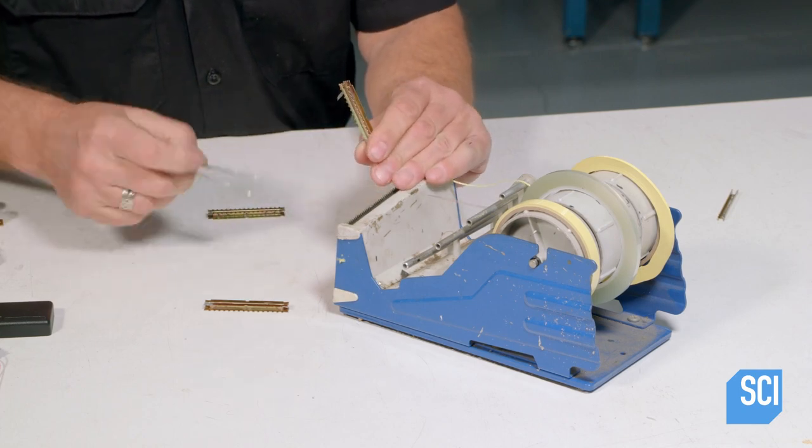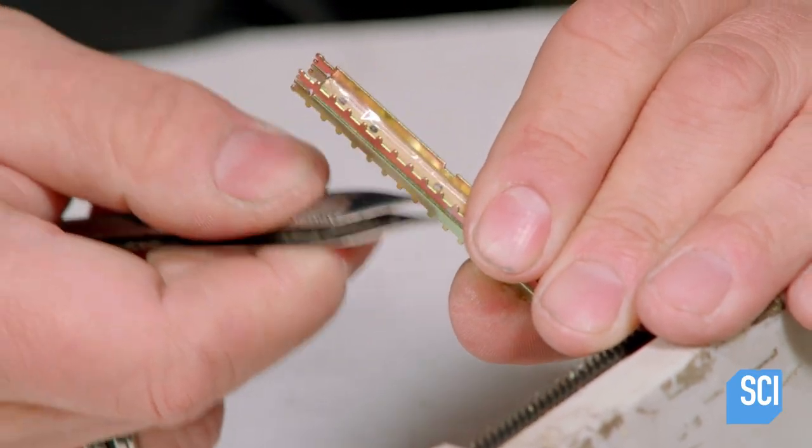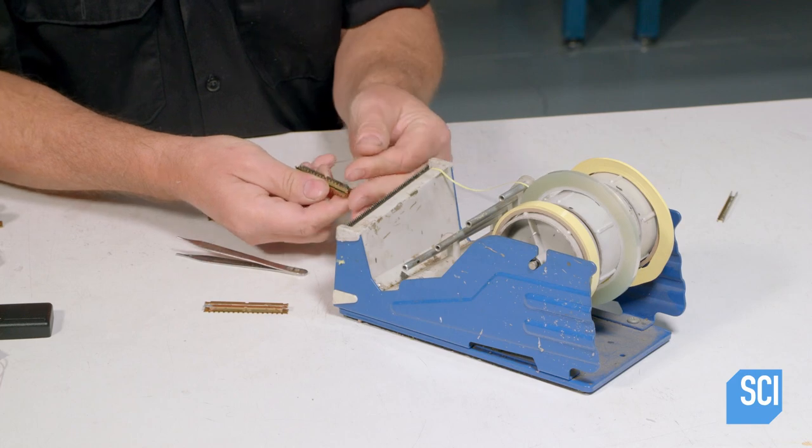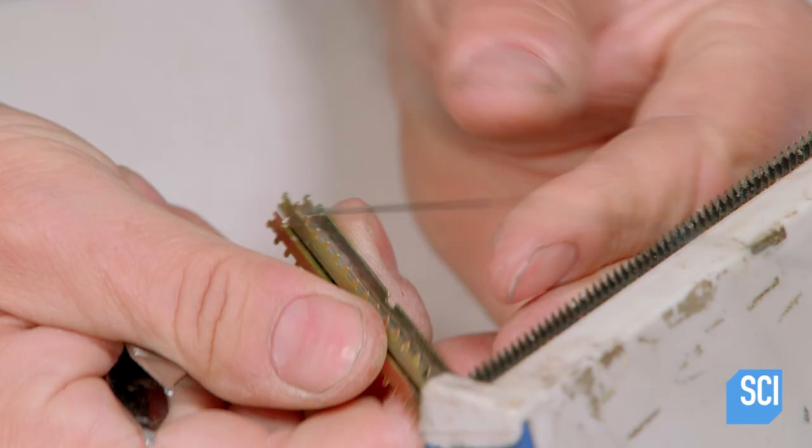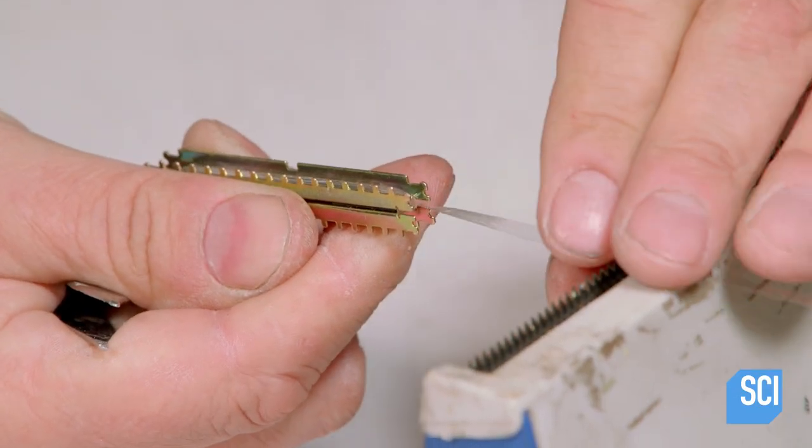He applies clear polyester tape along the inner edges of the bobbin. The tape will serve as electrical insulation, supplementing an insulating coating that's been applied to the metal.